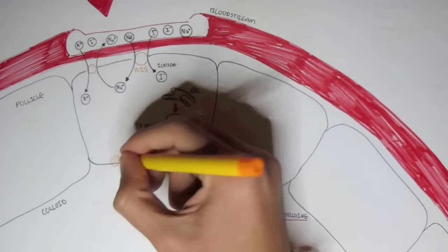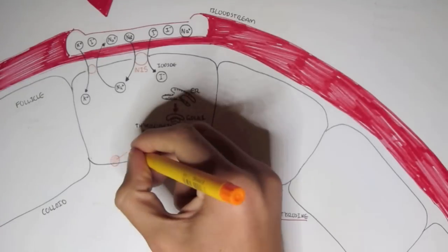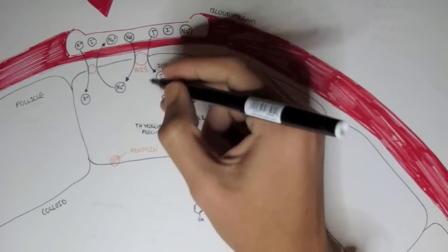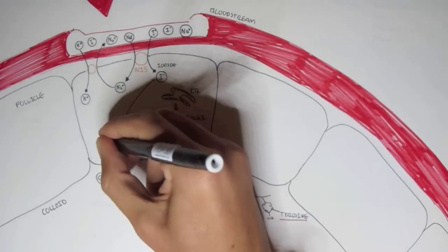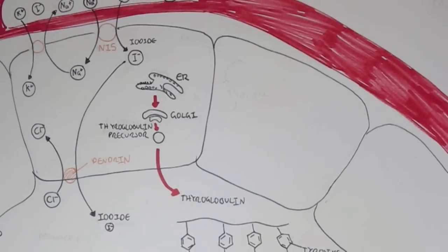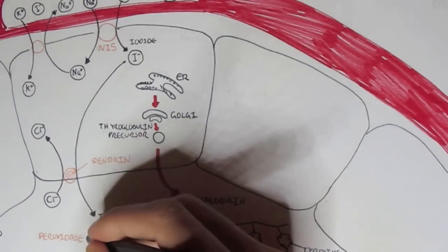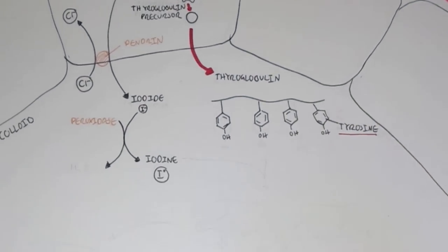Now that we have iodide in the follicular cells, it needs to be transported into the colloid, because the actual synthesis of thyroid hormones occurs in the colloid. There is a transporter called pendrin which transports iodide — a negatively charged molecule — while exchanging it for chlorine. Now iodide is in the colloid. A special enzyme called peroxidase in the colloid then oxidizes iodide to iodine.